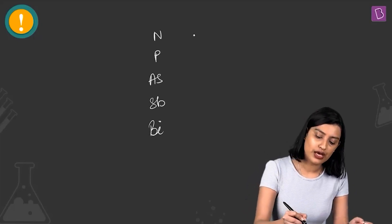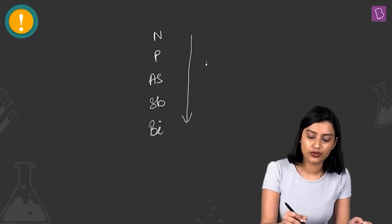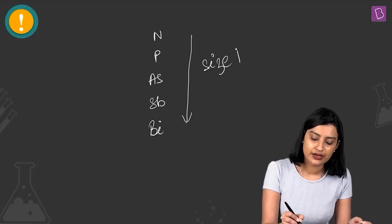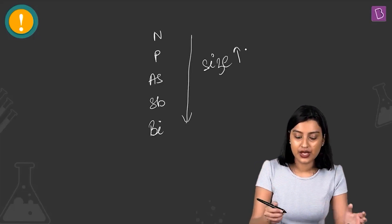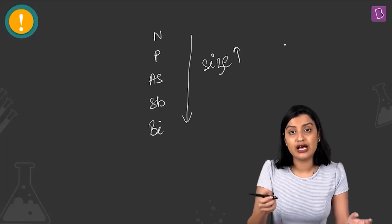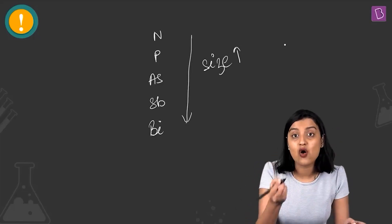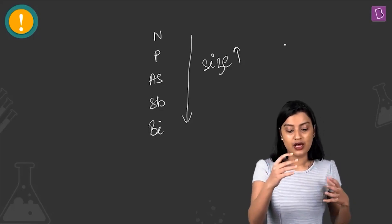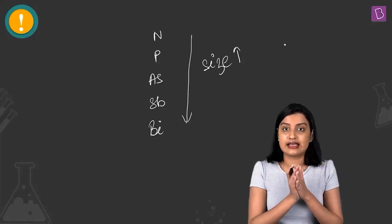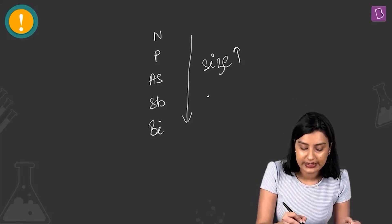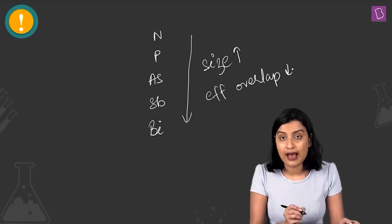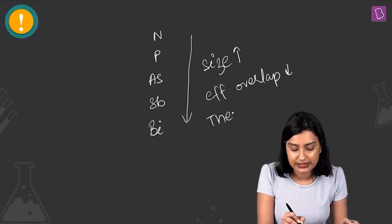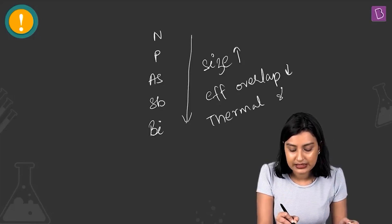As you go down the group, size increases. Since we're talking about hydrides, the effective overlap will be higher when you have a smaller atom. So as size increases going down the group, the effective overlap will be decreasing.